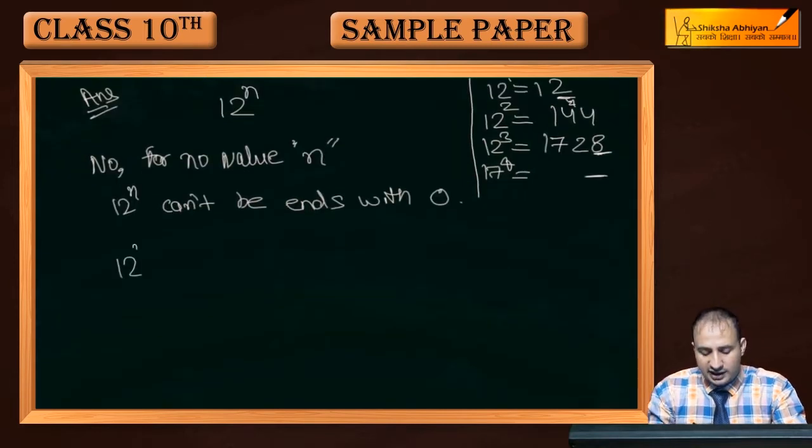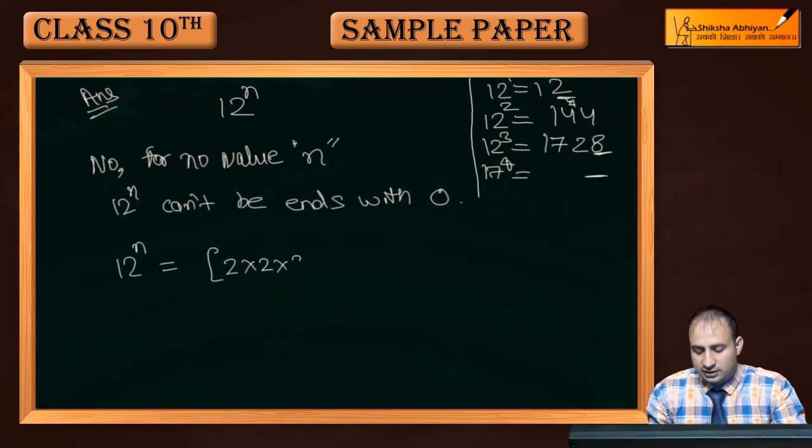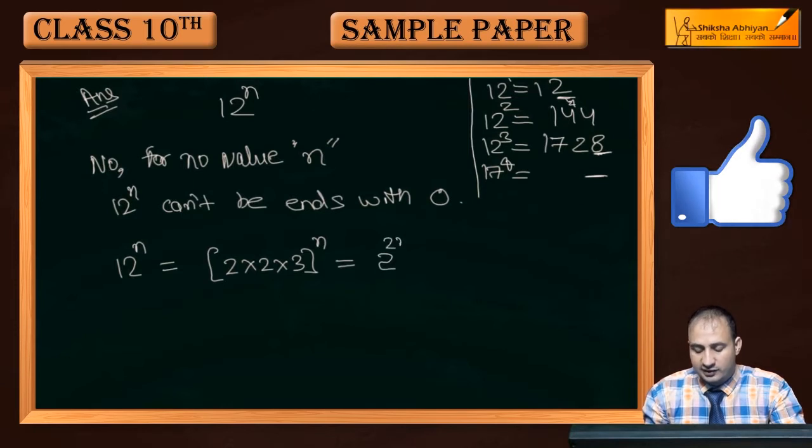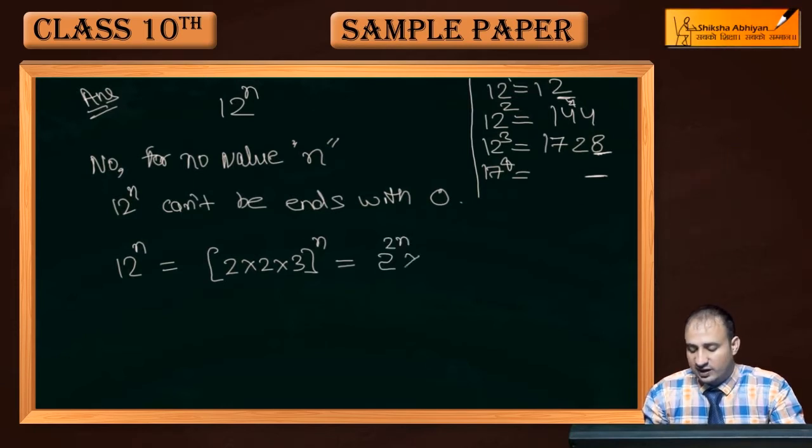Since 12 to the power n - 12 equals 2 times 2 times 3. So 12 to the power n equals 2 squared to the power n times 3 to the power n.